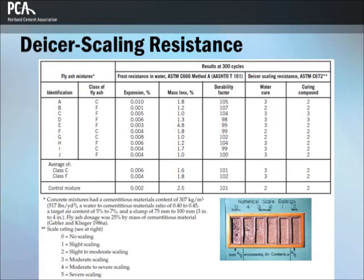This table demonstrates that well-designed, placed, and cured concretes with and without fly ash can be equally resistant to de-icer scaling. The ACI 318 building code states that the maximum dosage of fly ash, slag, and silica fume should be 25%, 50%, and 10% by mass of cementing materials, respectively, for de-icer exposures. Total SCM content should not exceed 50% of the cementitious material.